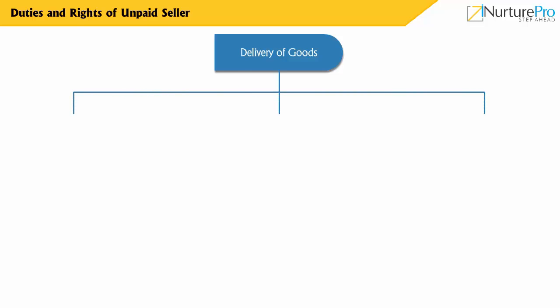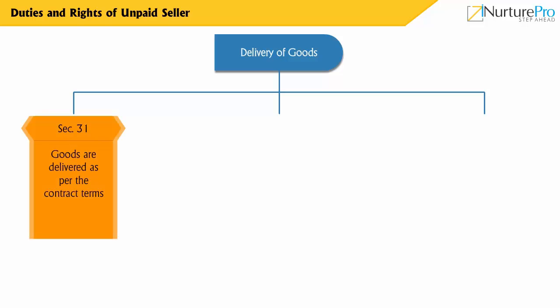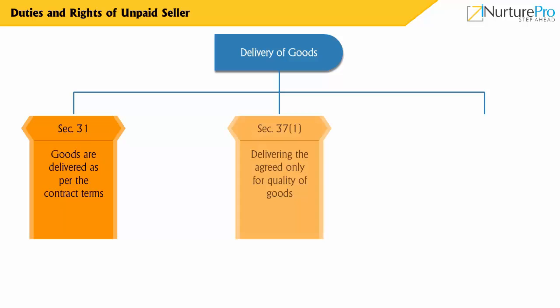The seller is also responsible for arranging the transfer of property in goods to the buyer. According to Section 31, goods are delivered as per the contract terms. According to Section 37-1, the seller must deliver the agreed quality of goods.